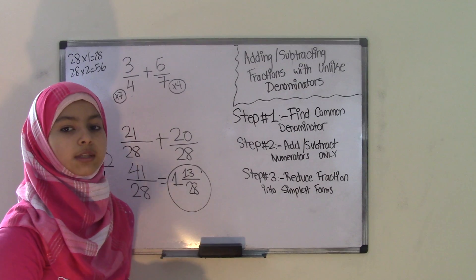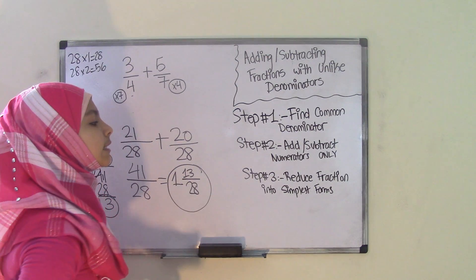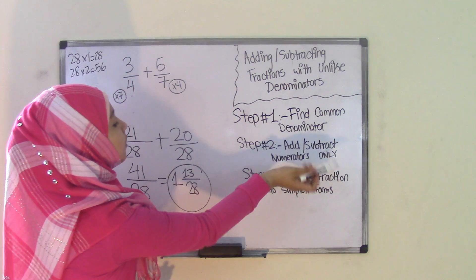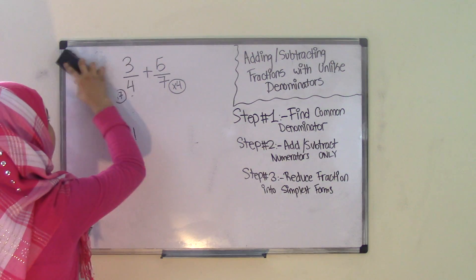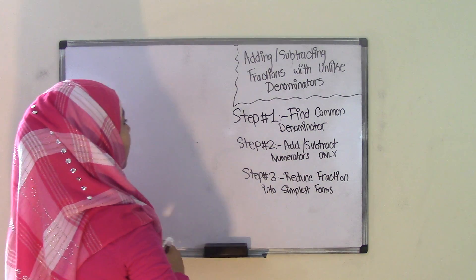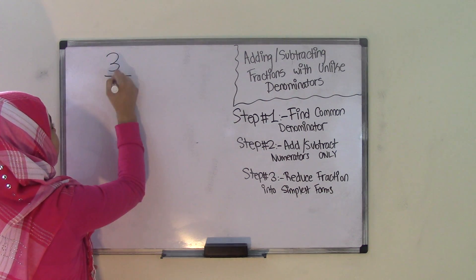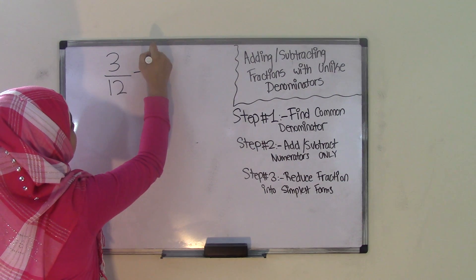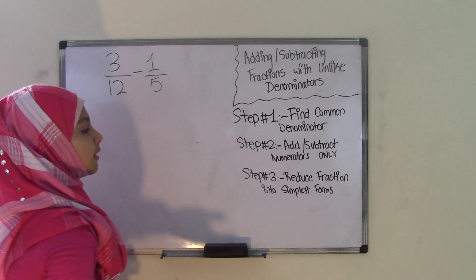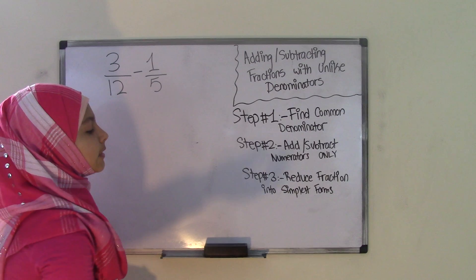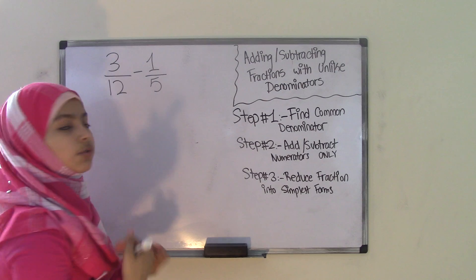So that's how you add fractions with unlike denominators. Now let's move on to subtracting fractions with unlike denominators. Remember, the steps stay the same — except in step 2, you're going to subtract the numerators only. So let's take another problem: 3 over 12 minus 1 over 5. In this case we're subtracting, and step 1 is still to find the common denominator using the LCM method.